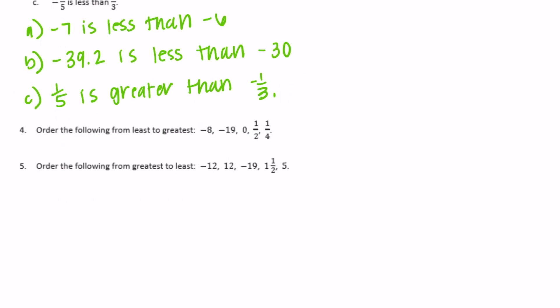Number 4: order the following from least to greatest — negative 8, negative 19, 0, 1 half, 1 fourth. Let's think about which one might be furthest to the left from 0. Negative 19 would be the smallest, then negative 8, then 0. Now the positives: which is smaller — 1 half or 1 fourth? So we put 1 fourth, and then 1 half is the greatest. Order: negative 19, negative 8, 0, 1 fourth, 1 half.